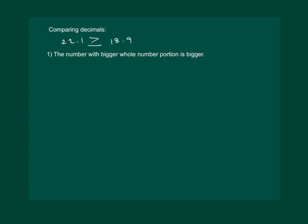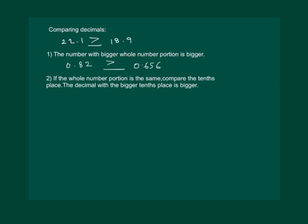Now consider 0.82 and 0.656. If the whole number portion is the same, compare the tenths place. The decimal with the bigger tenths place is bigger. So 0.82 is bigger than 0.656. The second rule states: if the whole number portion is the same, compare the tenths place — the decimal with the bigger tenths place is bigger.